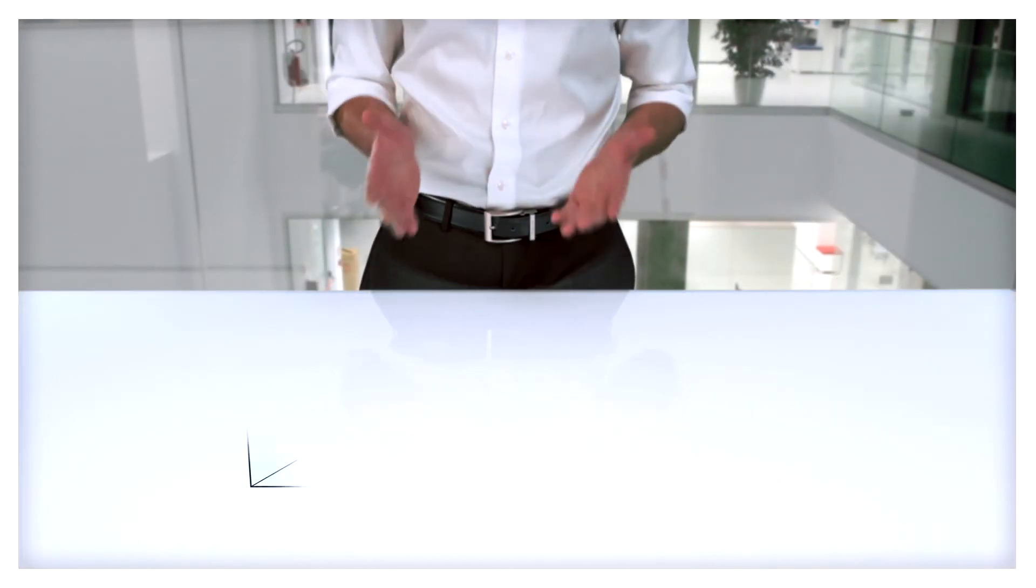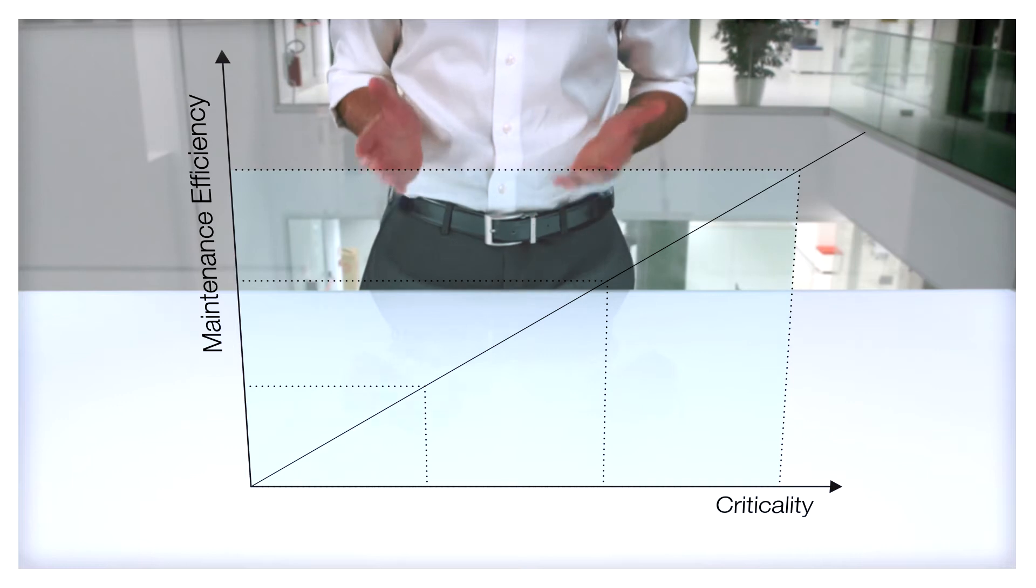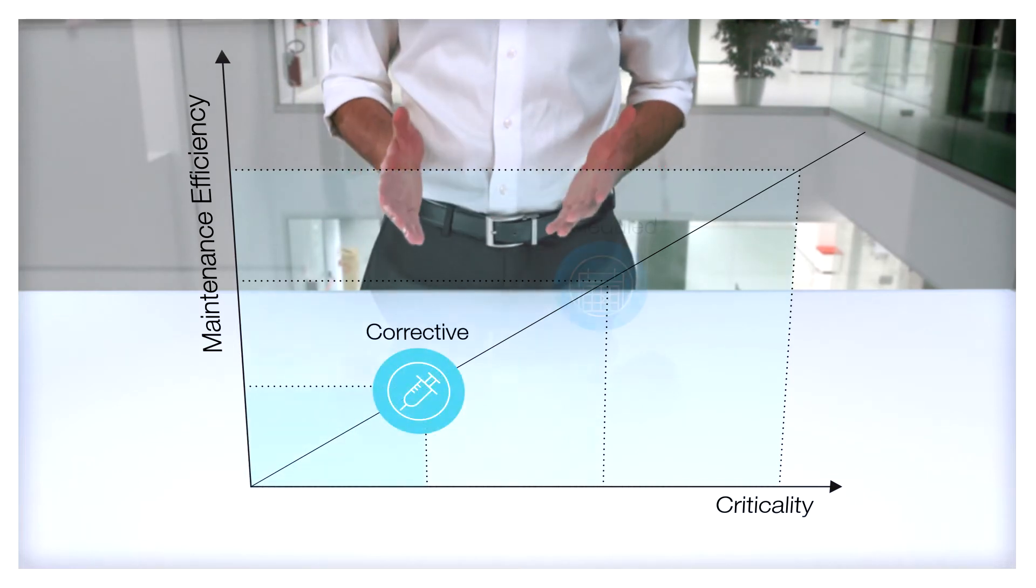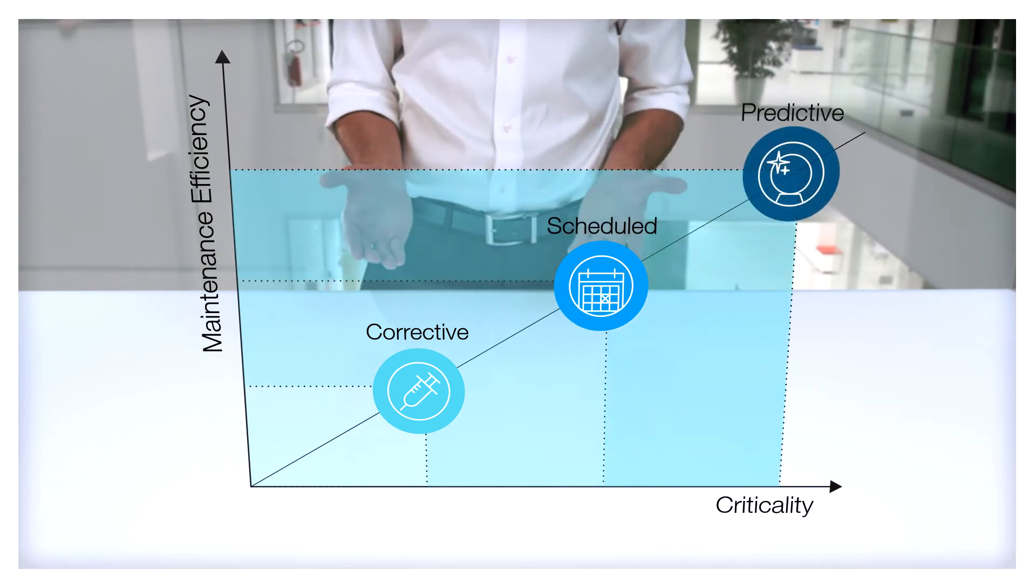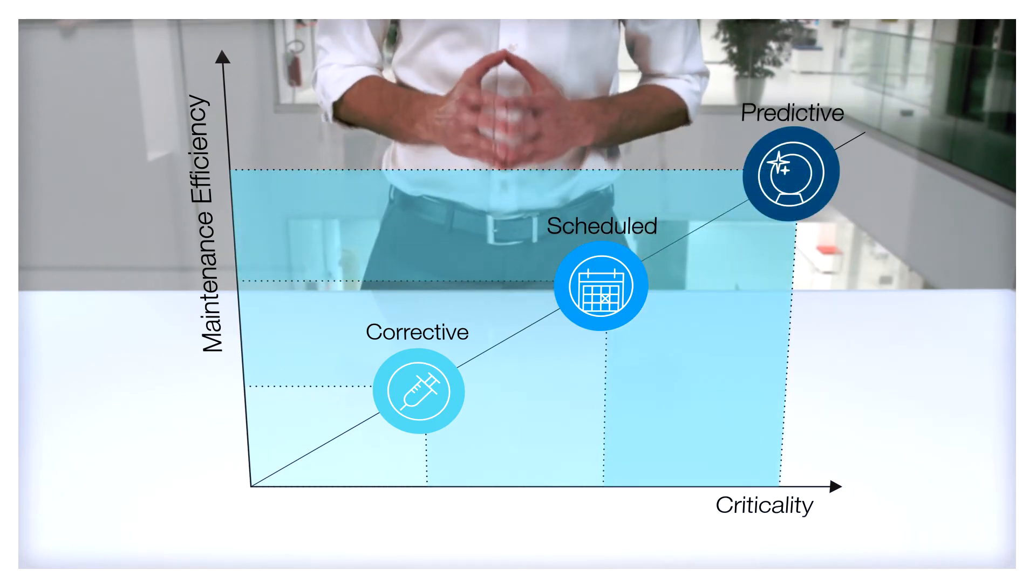ABB offers you three different stages of maintenance: corrective in the event of disruption, scheduled to periodically monitor the equipment, and predictive. As we all know, prevention is better than cure.